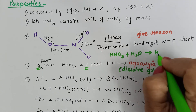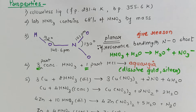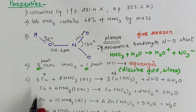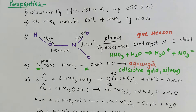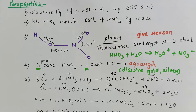Nitric acid is considered a strong acid because when dissolved in water it gives hydronium ions along with NO3⁻ (nitrate ions). Since nitric acid is a strong oxidizing agent, it oxidizes almost all metals except noble metals like gold and silver. Dilute nitric acid oxidizes copper to copper nitrate (copper's oxidation state changes from 0 to +2), and concentrated nitric acid also oxidizes copper to copper nitrate, but nitrogen itself is reduced — in dilute HNO3 nitrogen goes from +5 to +2 (forming NO), and in concentrated HNO3 nitrogen goes from +5 to +4 (forming NO2).